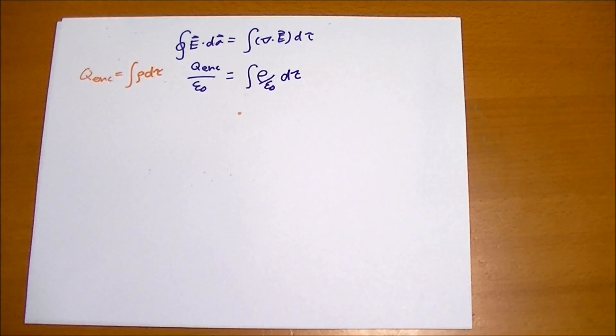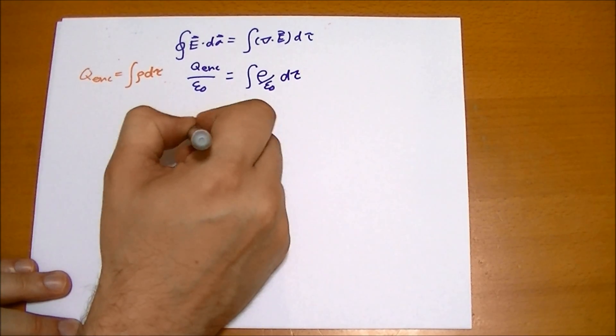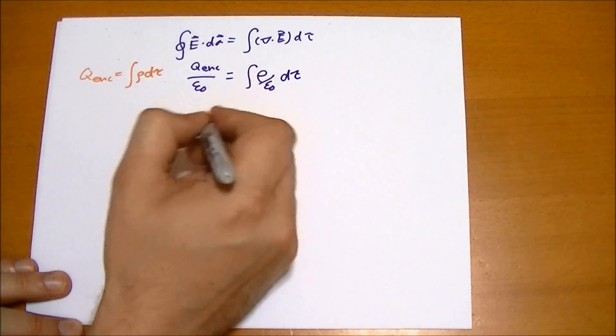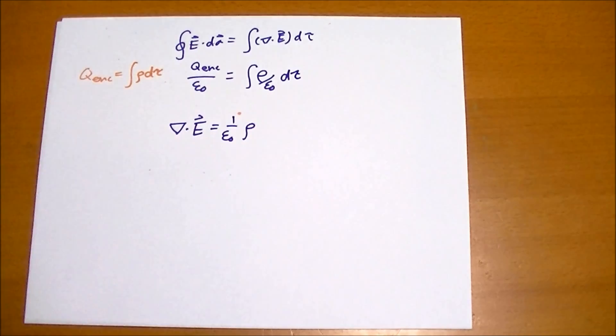And so the basic form of the differential form of Gauss's law, which is sometimes more useful, is the divergence of the E field is equal to rho over epsilon naught, the charge density at that point.